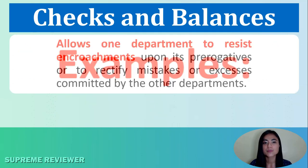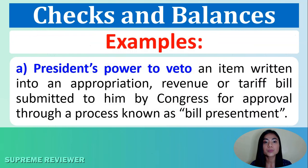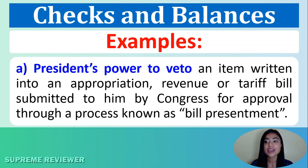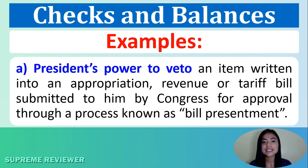First example: the President's power to veto an item written into an appropriation, revenue, or tariff bill submitted to him by Congress for approval, through a process known as Bill Presentment.